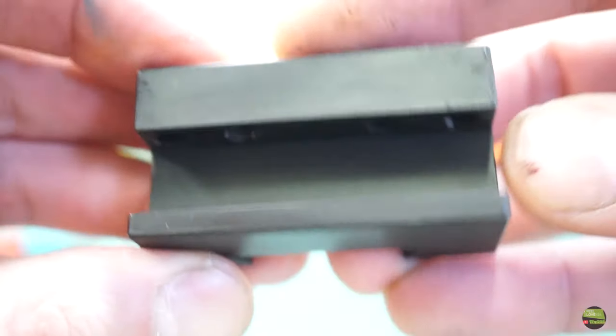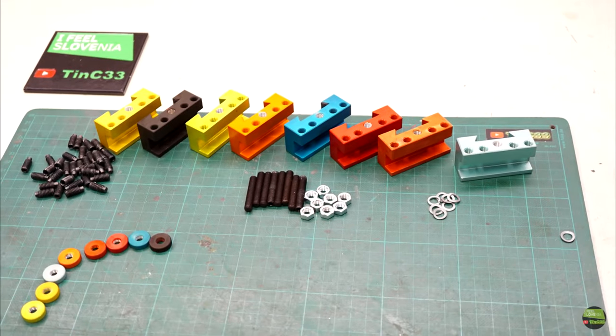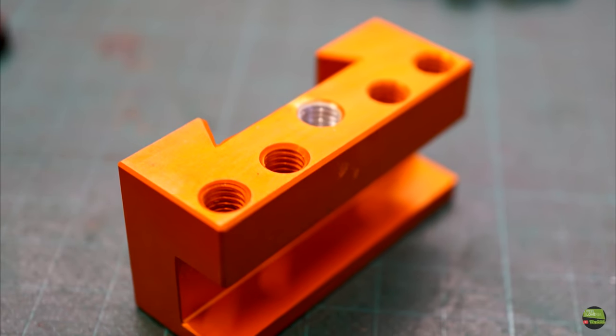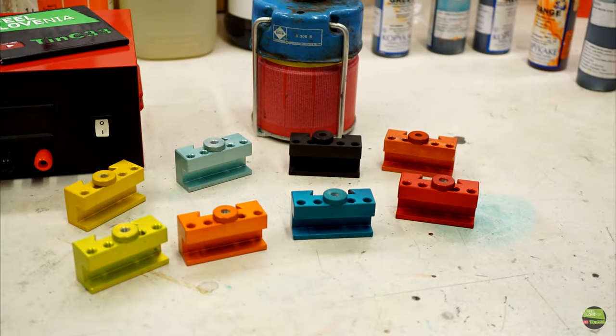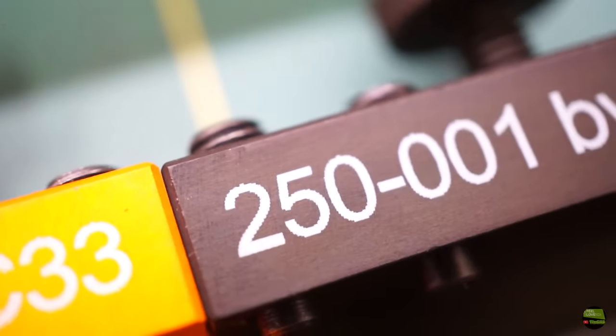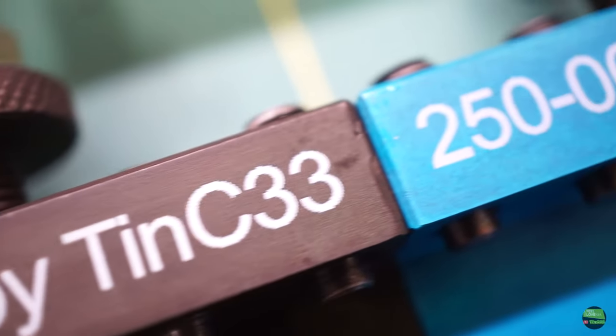That's it about anodizing aluminum at home. I made my holders in a few different colors. Anodizing is far from perfect, but I'm really happy with the result. Hope you enjoyed the video and learned something new. For the end I made the last detail on my holders by engraving them with diode laser. If you didn't see it already you're welcome to watch the video about making those holders. Thanks for watching. Like, share and subscribe if you like and see you next time.